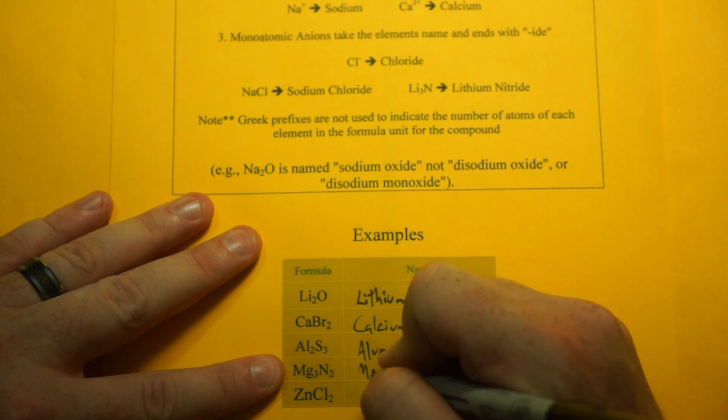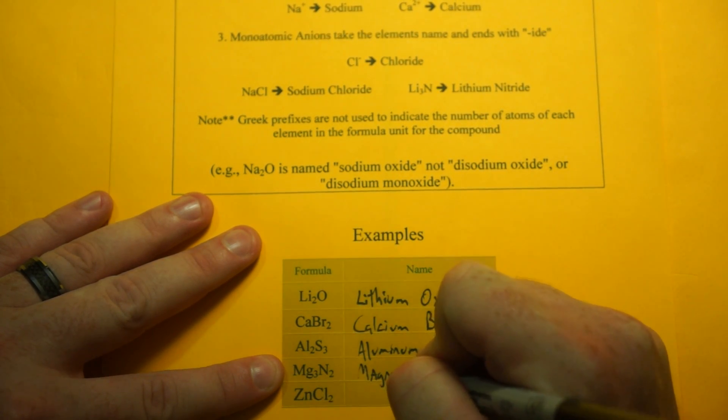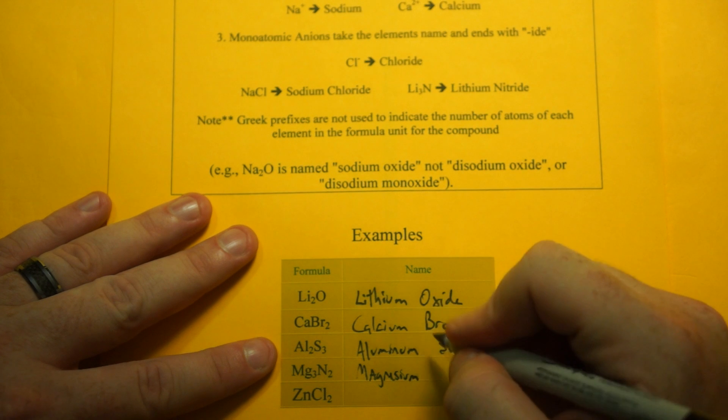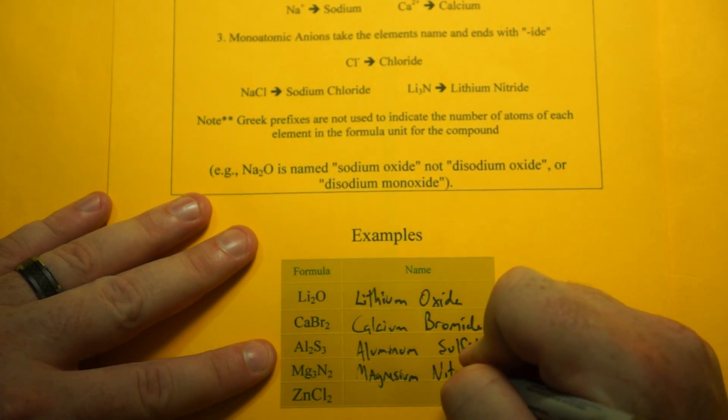Mg3N2, the Mg is magnesium, and N is nitrogen, and that turns into nitride.